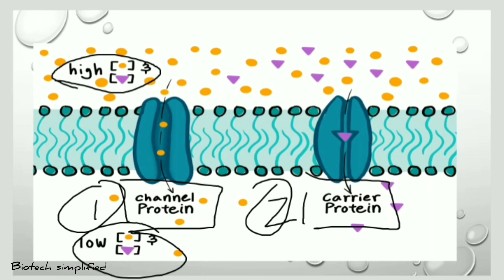In the channel protein mechanism, the transmembrane protein acts as a channel for transportation of molecules. In the carrier protein mechanism, certain molecules bind to the carrier proteins and conformational changes occur, facilitating their movement. Facilitated diffusion is a passive transport — it does not require any source of energy.